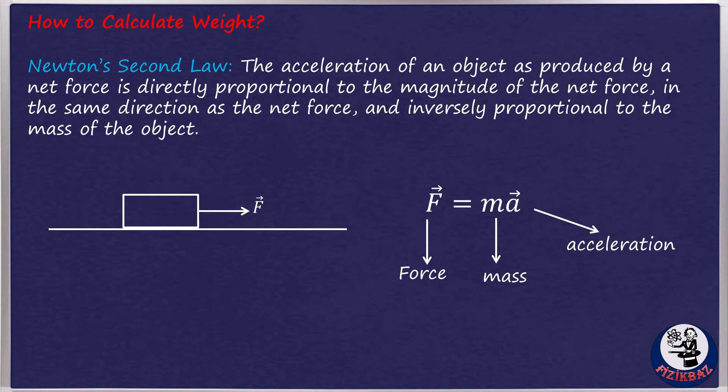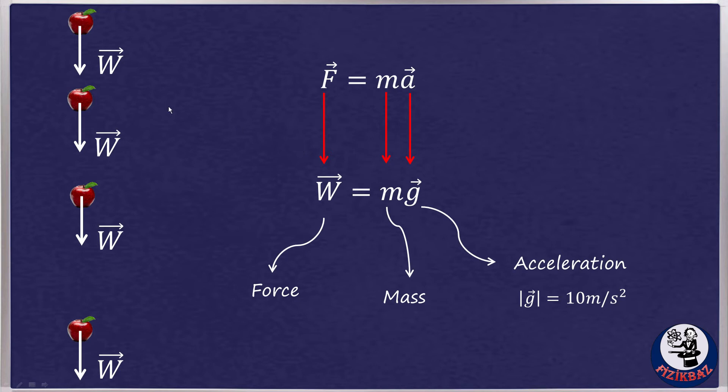This figure shows an apple falling. There are four images of the apple taken at equal intervals of time. The apple falls further in each successive time interval. This shows that its speed is increasing—it is accelerating. If an object accelerates, there must be a force that is causing it to do so.